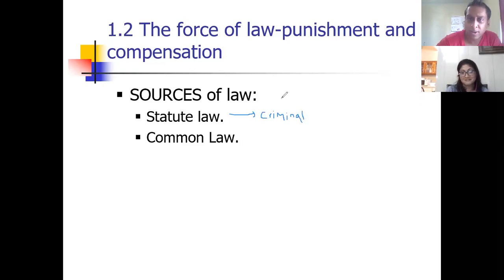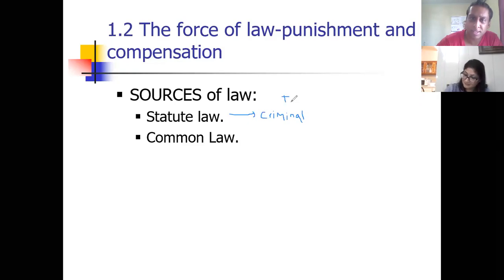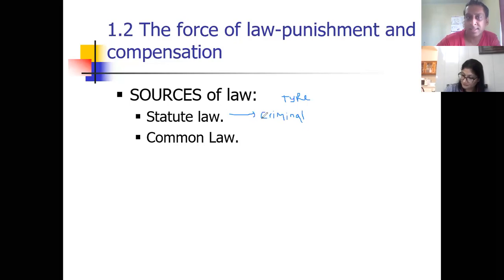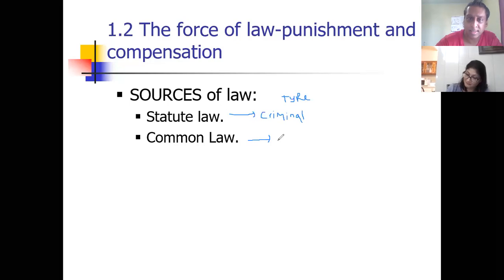Criminal law is a type of statute law, and it's the main type. You'll see it has gone into criminal law. One is like the daughter of the other one. So, criminal law is a type of statute law, and civil law is a type of common law.